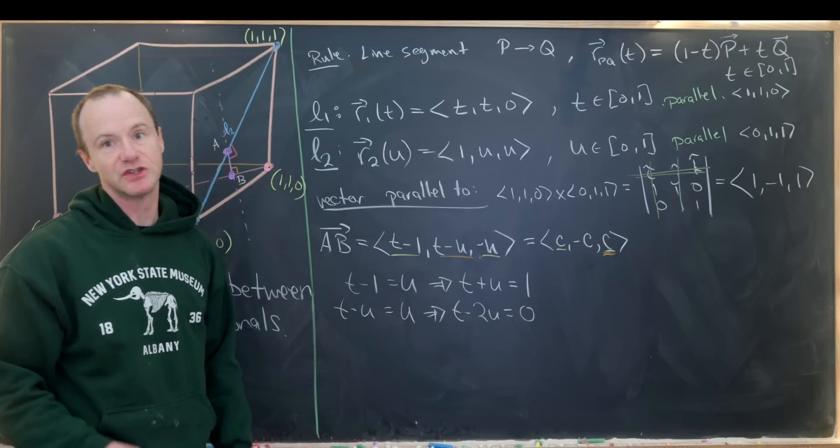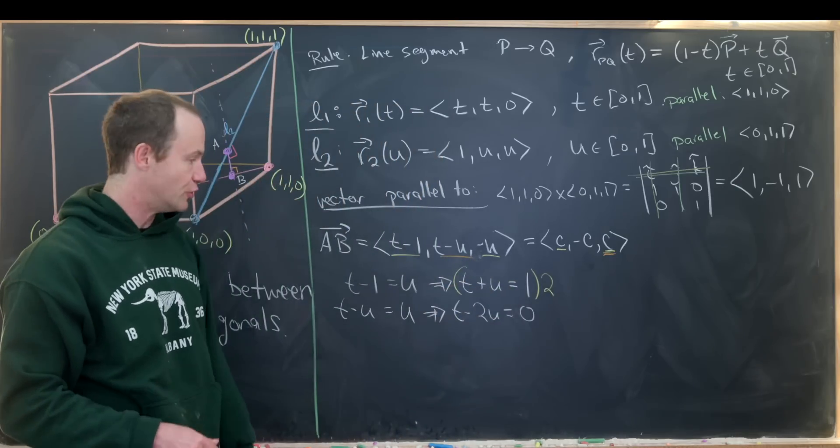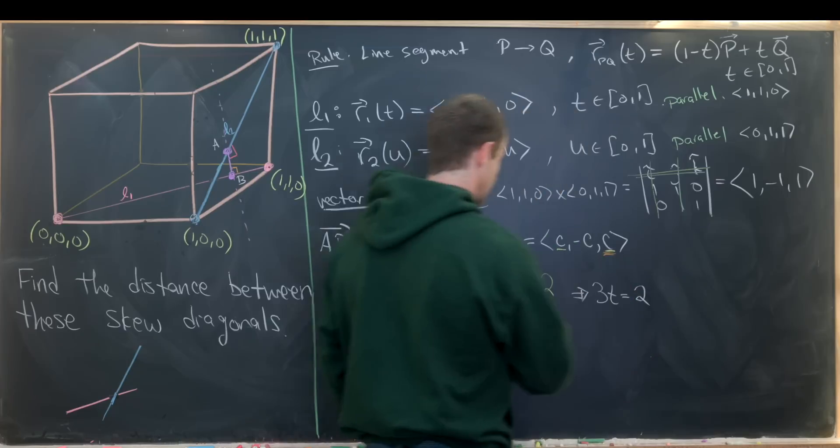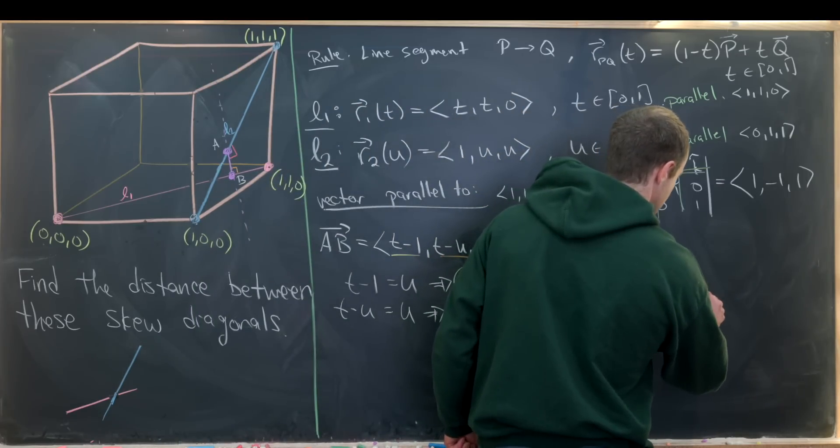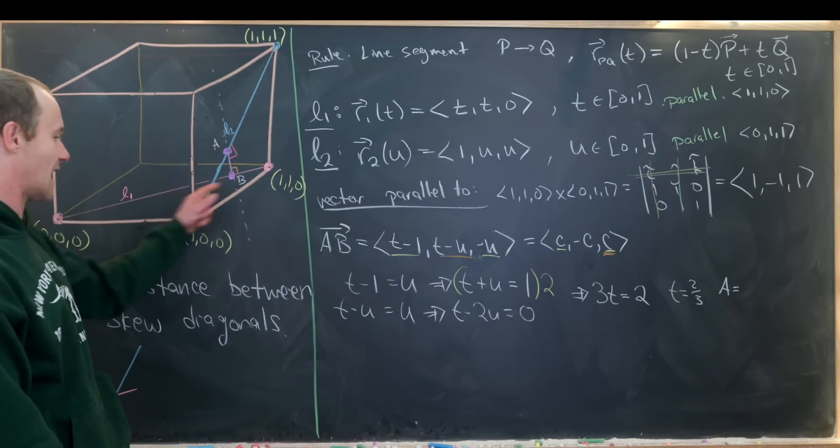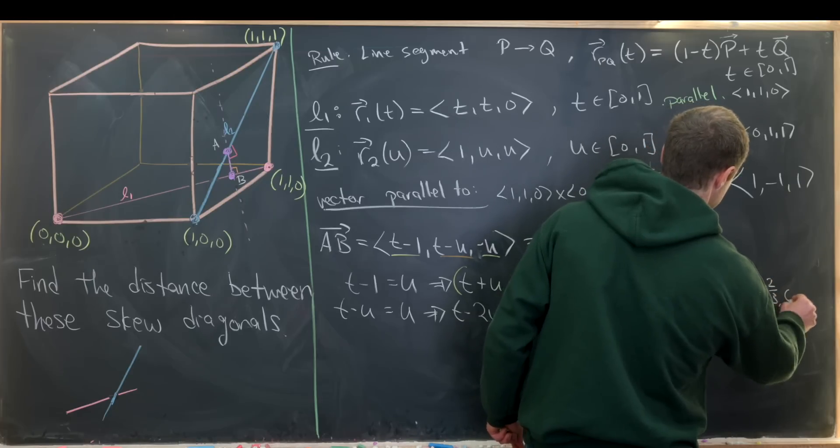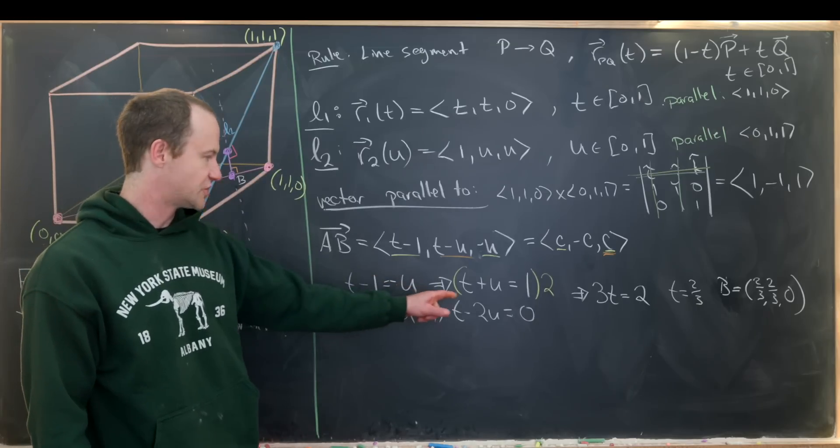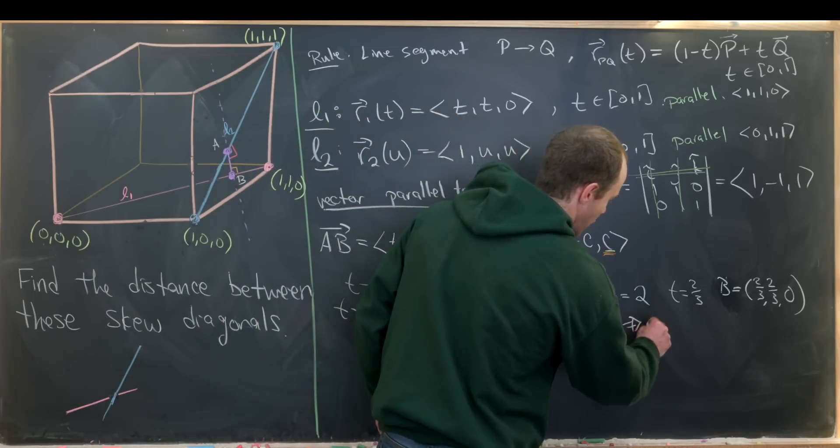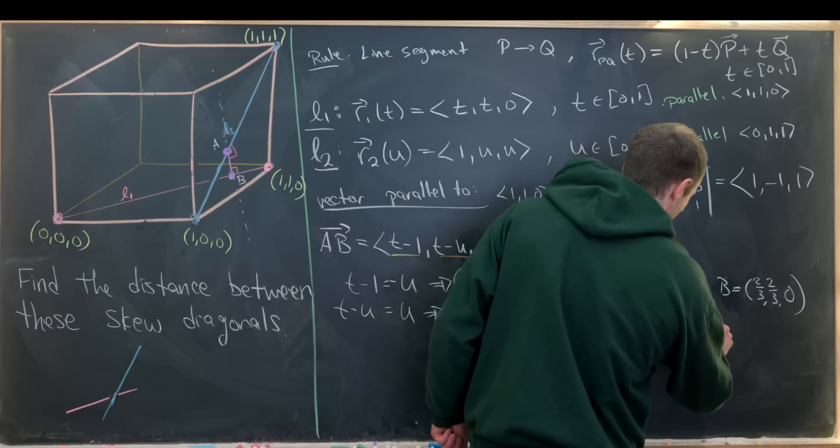Maybe we'll multiply this equation by two and then add them. That'll cancel out the u part. And we'll end up with 2t plus t, which is equal to 3t equals two, because we've got two times one. So that means we have t equals two thirds. But that means our coordinate b is equal to two thirds, two thirds, zero. So that's our coordinate for b. And then similarly, we can plug two thirds back in here, and we'll see that u is equal to one third. But that gives us our coordinate for a, which is the point right here on L2. And that's going to be equal to one, one third, one third, by our parametrization of our second line.